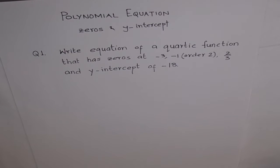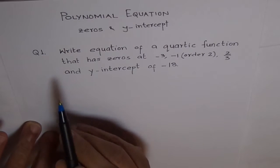Now, let's try to write equation for a polynomial given some conditions. In this part, we will write equation of a polynomial given zeros and y-intercept. So, let's have a look at this problem.